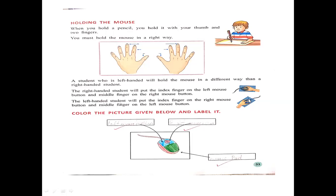So there are two methods of holding the mouse: for right-handed students and for left-handed students. There is also an activity to color the picture given below and label it — identifying which is the left-handed button and which is the right-handed button. Here we also have the mouse pad shown.